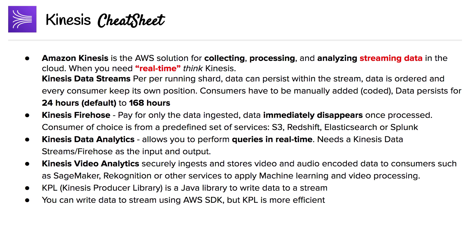There are four types of streams, the first being Kinesis Data Streams. That's pay per shard that's running — think of an EC2 instance, you're always paying for the time it's running. Data can persist within the stream, data is ordered, and every consumer keeps its own position. Consumers have to be manually added, so they have to be coded to consume, which gives you a lot of custom flexibility. Data persists for 24 hours by default, up to 168 hours.